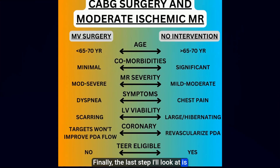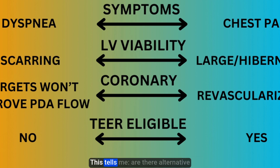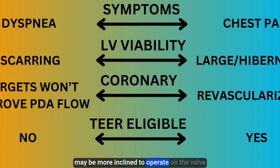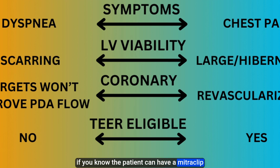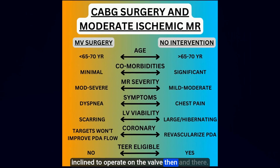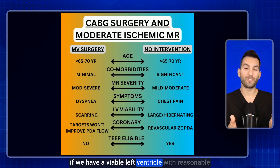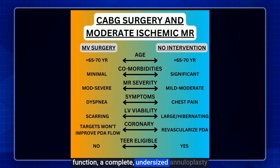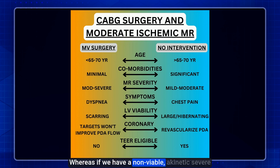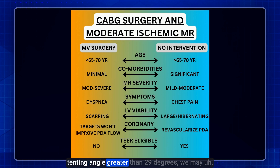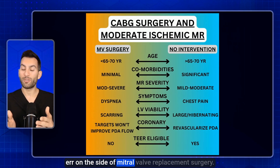The last step is assessing transcatheter edge-to-edge repair (TEER) eligibility — are alternative options available? If the patient is not a TEER candidate, I may be more inclined to operate on the valve then and there to avoid a redo surgery. Conversely, if a mitral clip is feasible down the road, I may defer valve intervention. Regarding surgical strategies: a viable LV with reasonable function may be appropriate for a complete undersized annuloplasty ring, whereas a non-viable, akinetic, severely dilated LV or a P3 tenting angle greater than 29 degrees may favor mitral valve replacement.